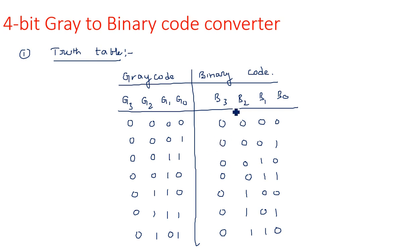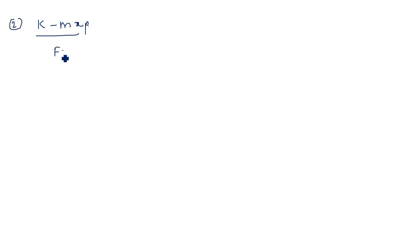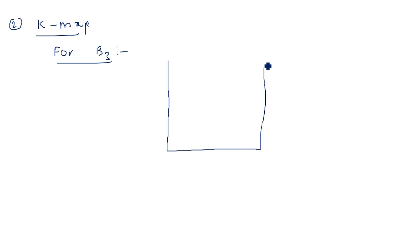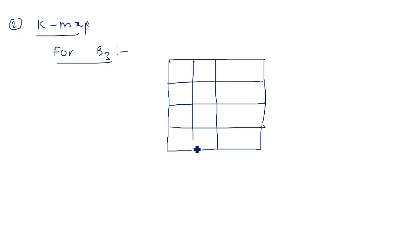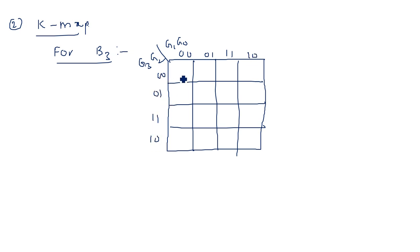We need to find expressions for B3, B2, B1, and B0 — four expressions in total. In order to get the expressions we need to follow K-map simplification. So the second step is K-maps. We take a 4-variable K-map for B3, since it is a 4-bit gray code to binary conversion. The inputs are G3, G2, G1, G0.